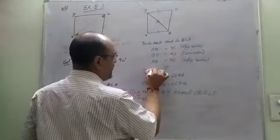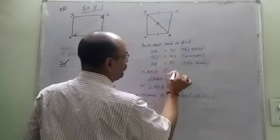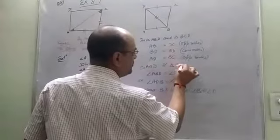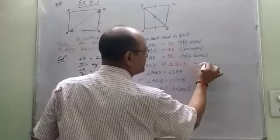It means triangle ABD is congruent to triangle BCD by side, side, side.